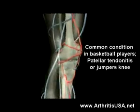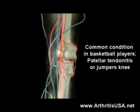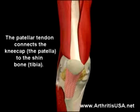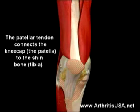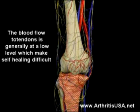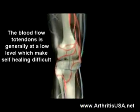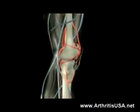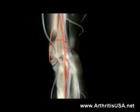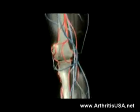A very common condition seen in basketball players is patellar tendonitis, also known as jumper's knee. The patellar tendon connects the kneecap, also known as patella, to the shin bone. The blood flow to the tendon is generally at a low level, which makes self-healing difficult. Patellar tendonitis is a condition that arises when the tendon and the tissue that surrounds it become inflamed and irritated.